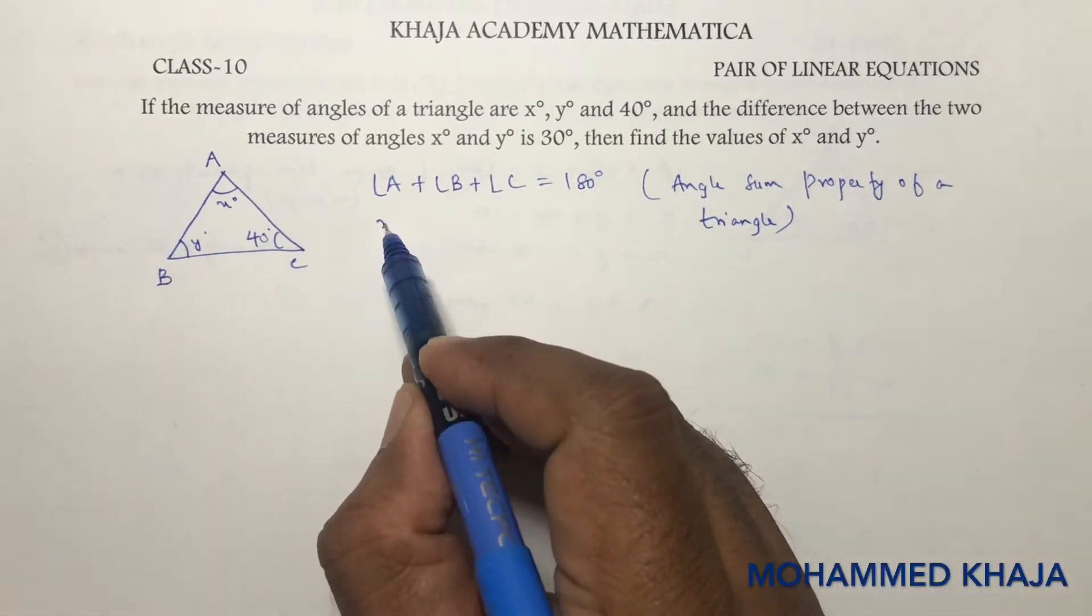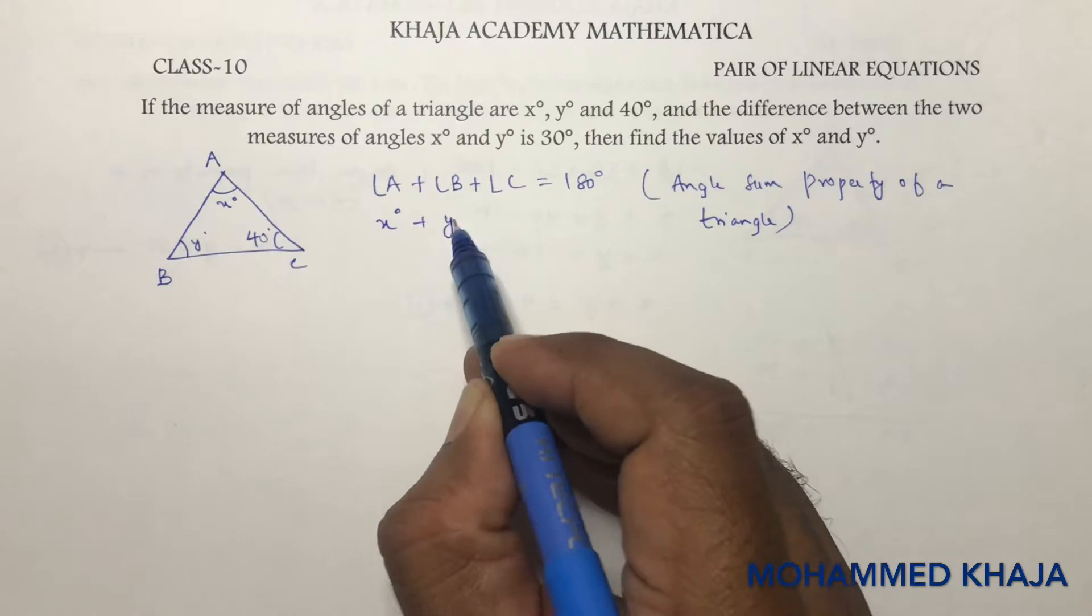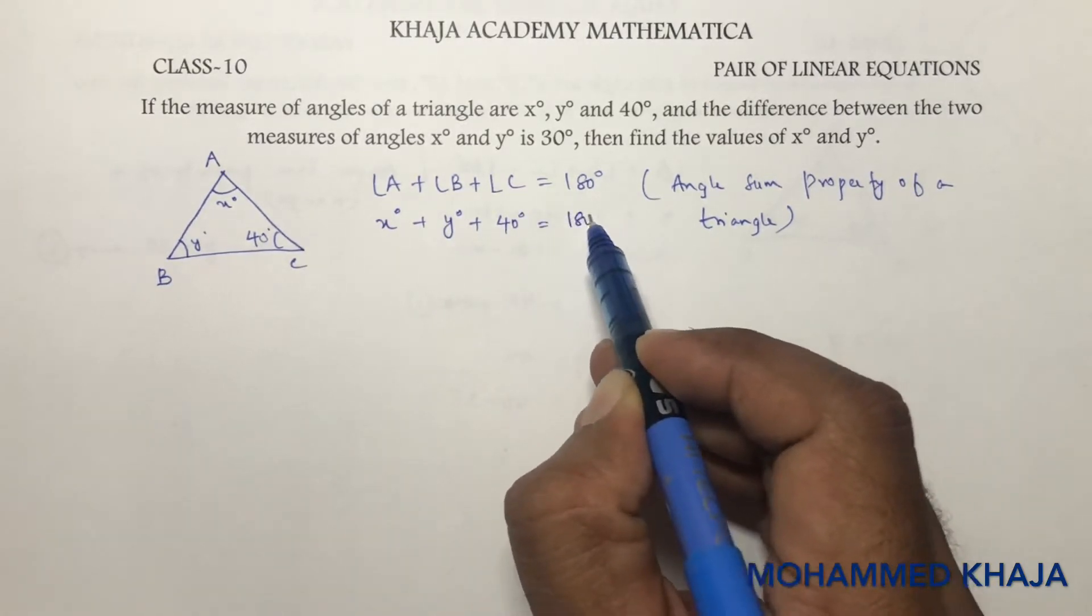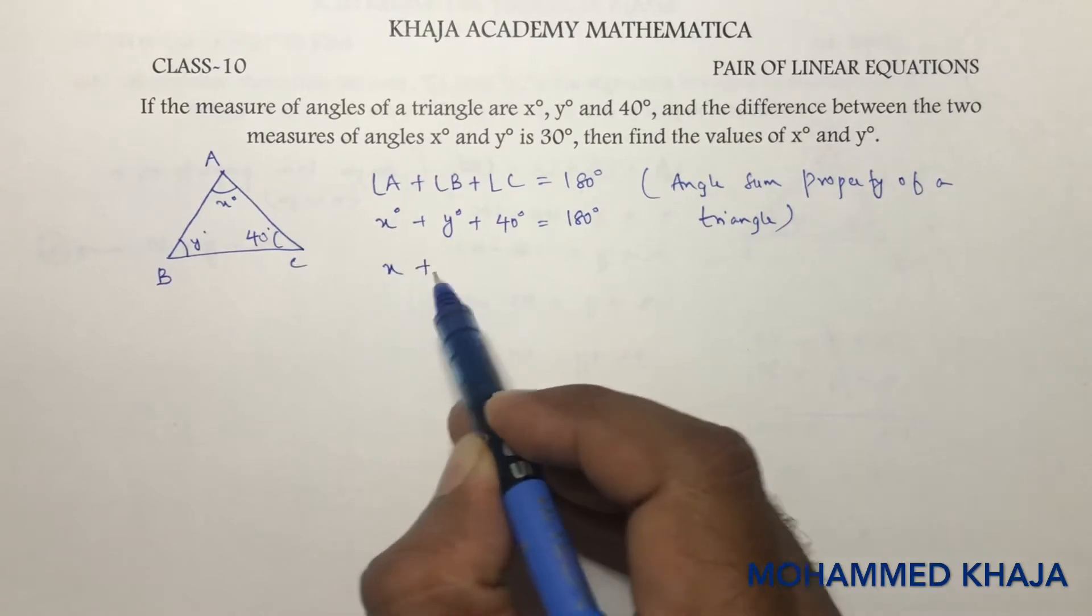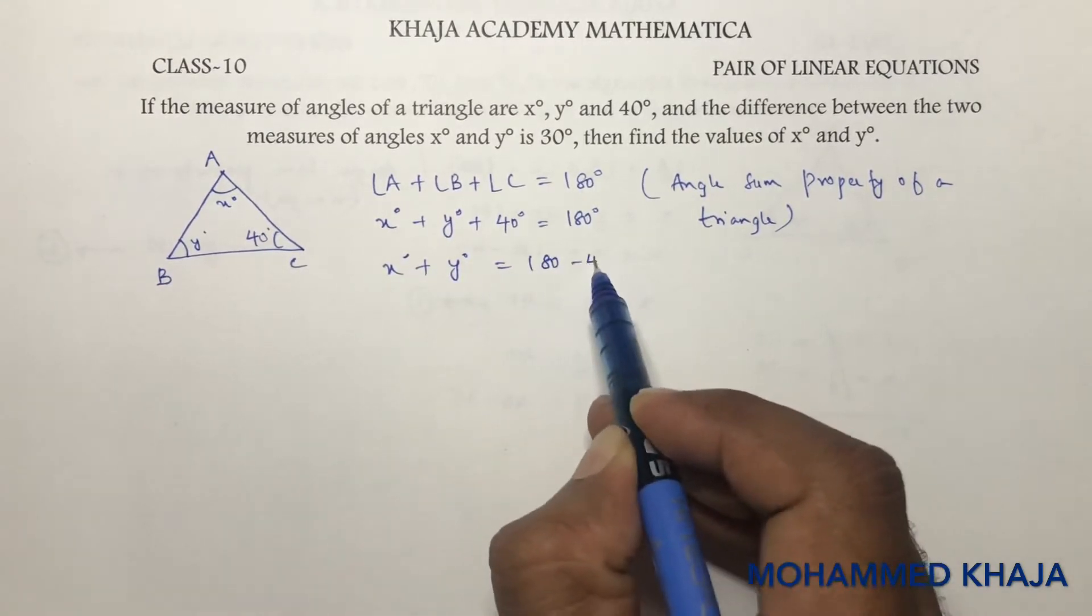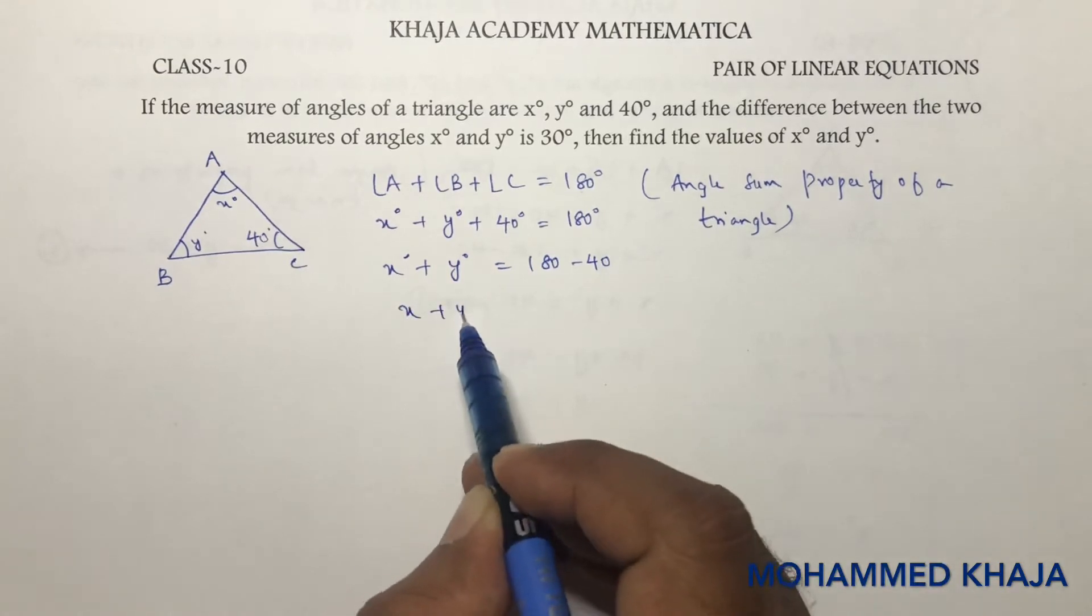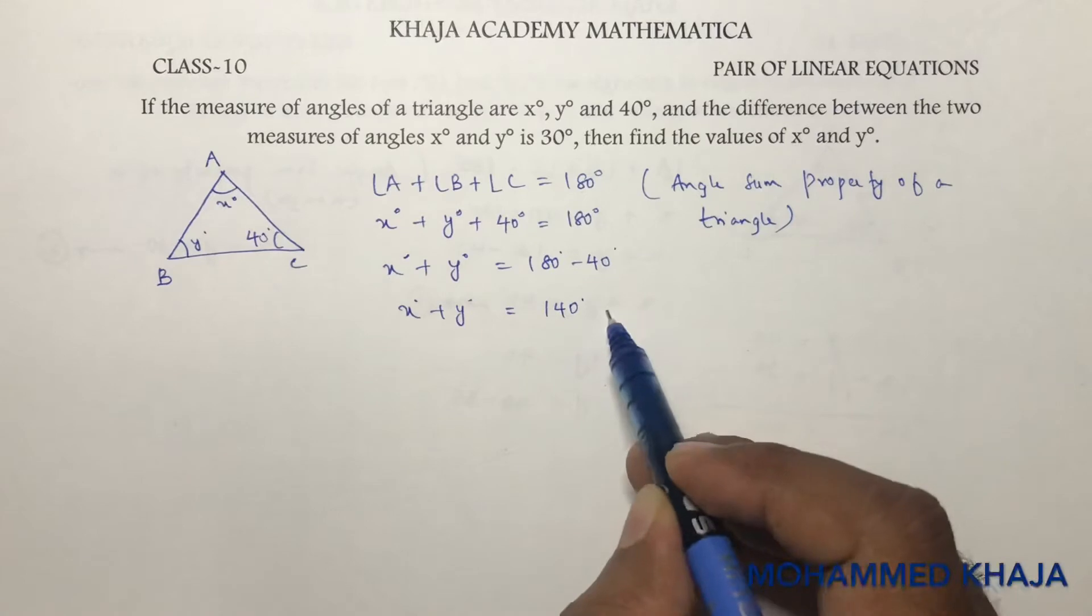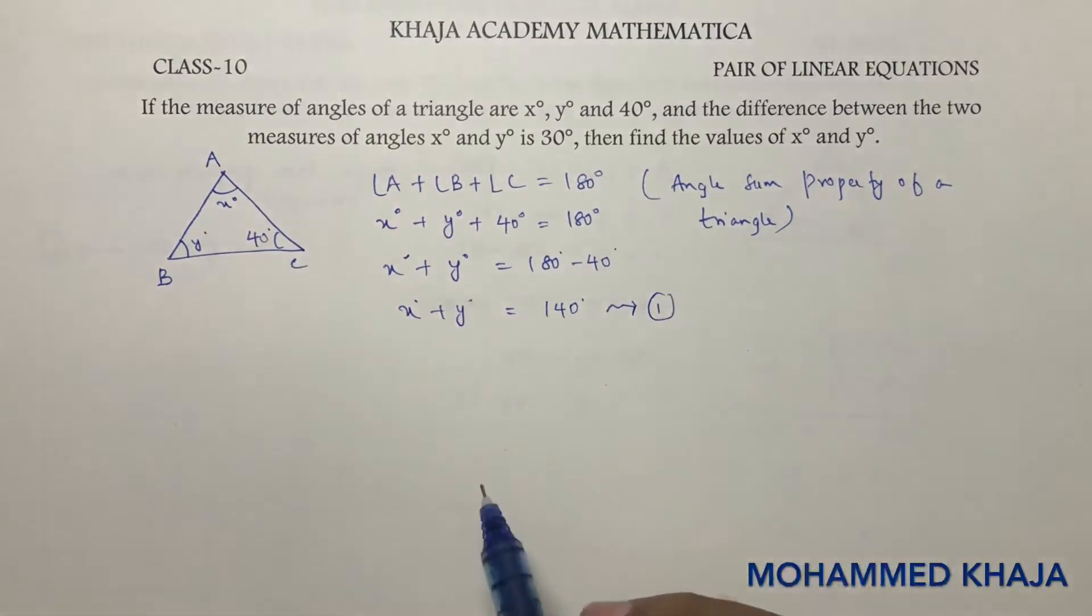Angle A is x degrees, B is y, C is 40 degrees, which equals 180 degrees. So x plus y equals 180 minus 40. Therefore, x plus y equals 140 degrees. This is equation one.